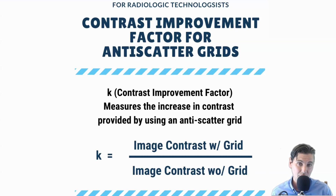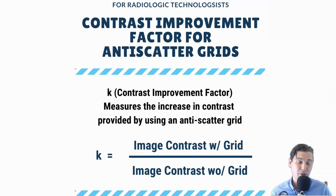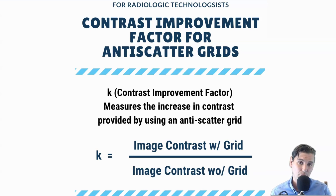Smaller, lower contrast lesions can be seen better if there's less background haze or fog in your x-ray images. We quantify this with the contrast improvement factor, which we call K. The contrast improvement factor is the image contrast with the grid compared with the image contrast without the grid. So if K equals 2, that means your contrast is going to be twice as high with the grid present than without it.